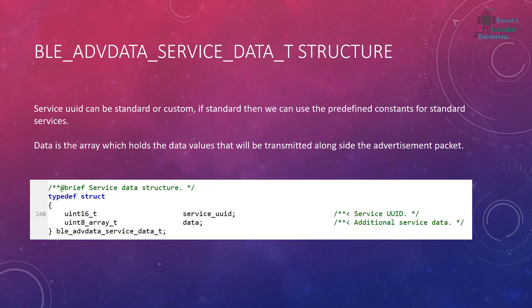Now let's look at the service data structure. There are two parts: the first is a uint16_t service UUID, and the second is a uint8_t array for the data. The service UUID can be standard or custom — for standard we use predefined constants, and for custom we define a custom UUID. The data array holds the values that will be transmitted alongside the advertisement packet.